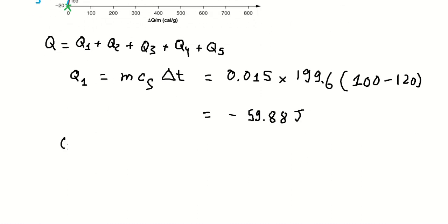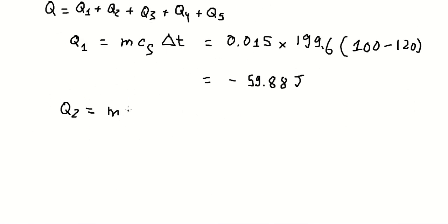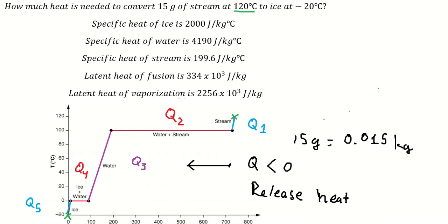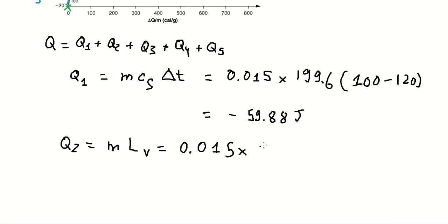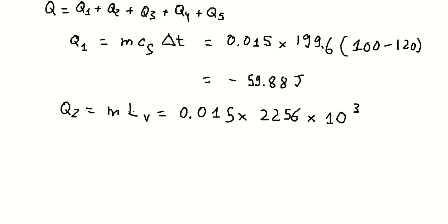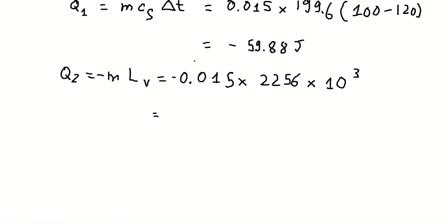Now we go to cube of number 2. We have M multiplied by the latent heat. And that is about this one. So we need to put the negative in here. So we have negative 33,842 in here.